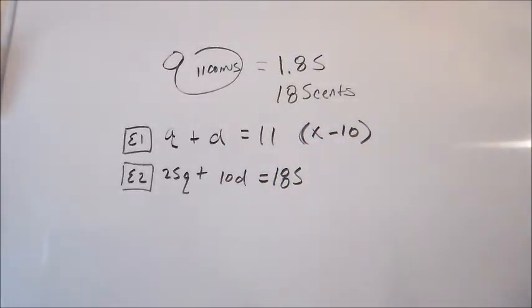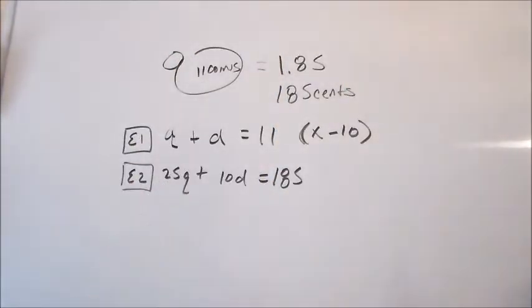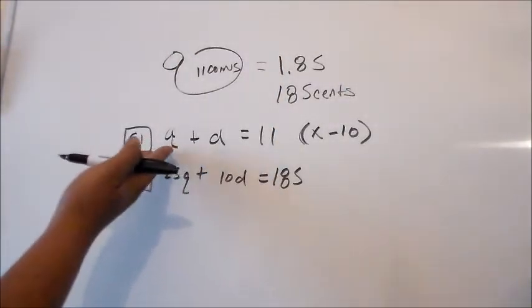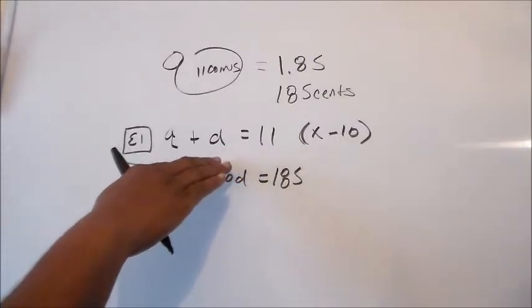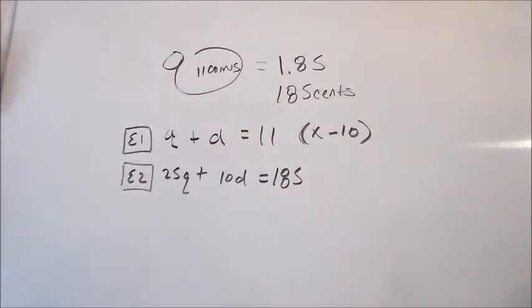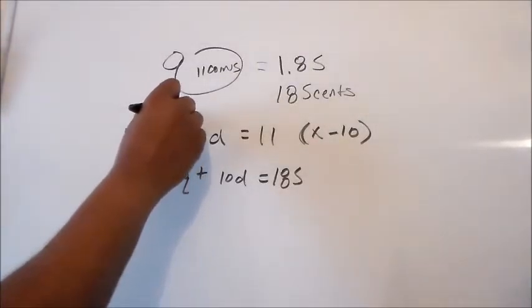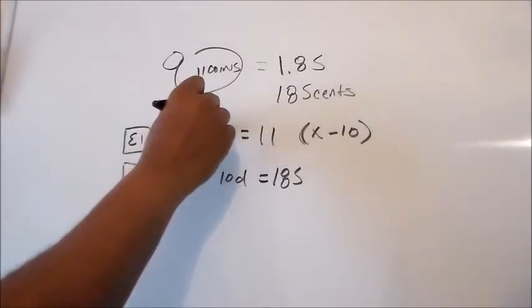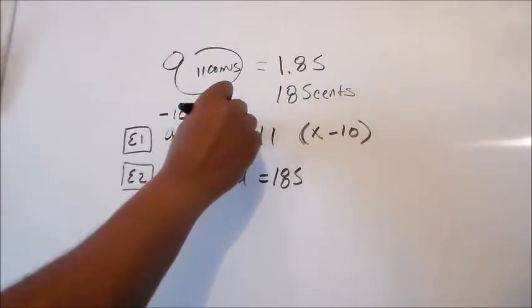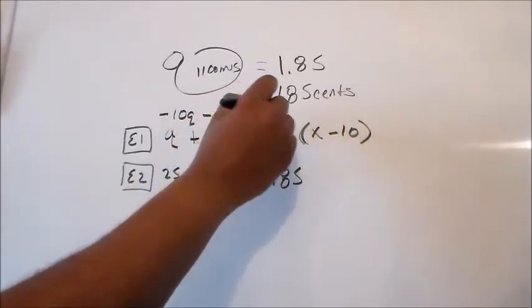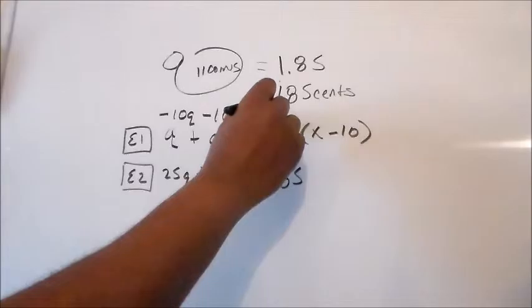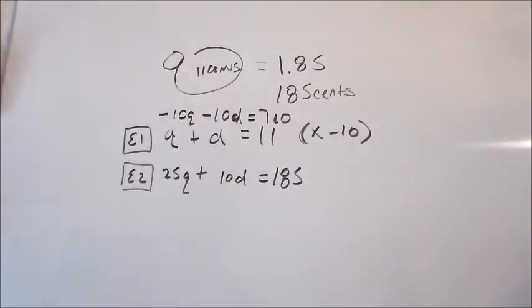So equation one is going to be multiplied by negative 10. And why are we doing that? Well the reason why I'm doing that is because we're going to wind up adding down in this situation. So what we're going to do is manipulate equation one by adding. So what this is going to turn into is negative 10q minus 10d equals negative 110.